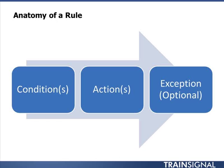A Transport Rule is really made up of three different items: a condition, an action, and possibly an exception. It's good to note that you can have more than one condition and more than one action, and that exceptions are optional.